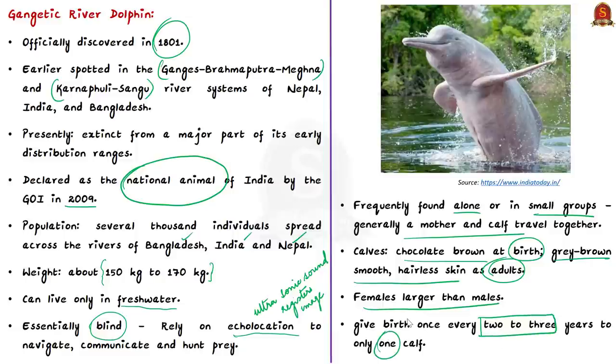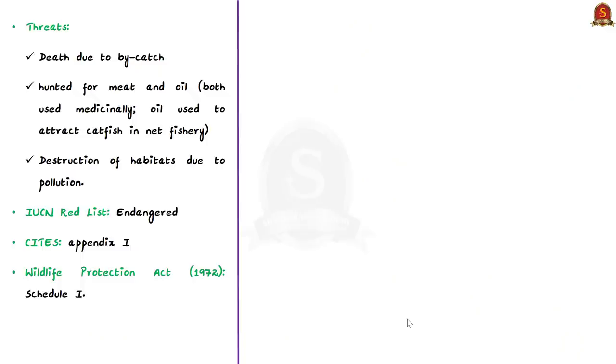Now when we talk about the threats to these dolphins, many dolphins die as a result of bycatch and the Ganges River Dolphins are also hunted for meat and oil which are both used medicinally. Their oil is also used to attract the catfish in net fishery. Apart from this, industrial, agricultural and human pollution is also another serious cause of habitat degradation because each year around 9000 tons of pesticides and 6 million tons of fertilizers are used in the vicinity of the river. High levels of pollution can directly kill prey species and dolphins and they have the potential to completely destroy their habitat. Being the top predator, these river dolphins have been known to have high levels of persistent toxic chemicals in their bodies which is likely to cause adverse effects on their health. They are also listed as endangered on the IUCN red list and they are included in appendix 1 of CITES and also in schedule 1 of the Wildlife Protection Act of 1972.